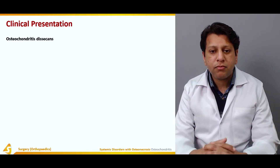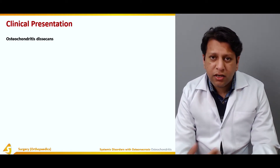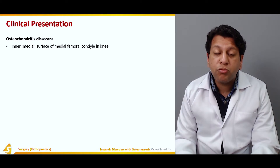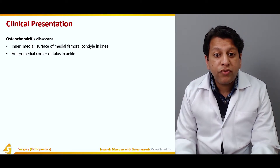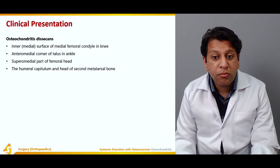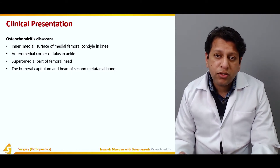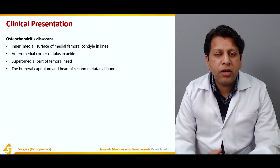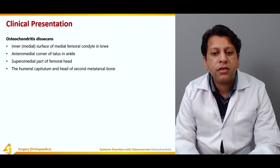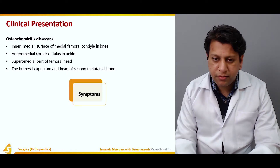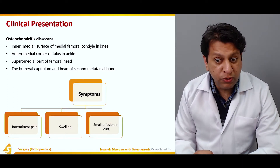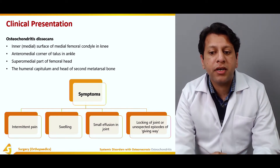Coming to the clinical presentation: osteochondritis dissecans can occur at the elbow or at the knee. The inner medial surface of the medial femoral condyle is the most common area, followed by the anteromedial corner of the talus at the ankle, and the superior medial part of the femoral head. Symptoms include intermittent pain, swelling, small joint effusion, and locking of the joint or unexpected episodes of giving way.